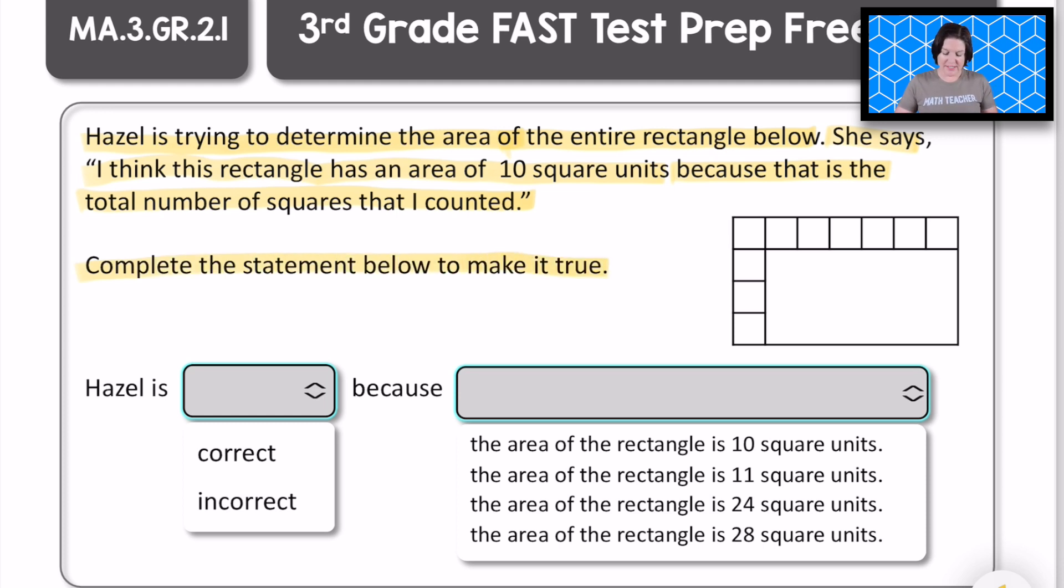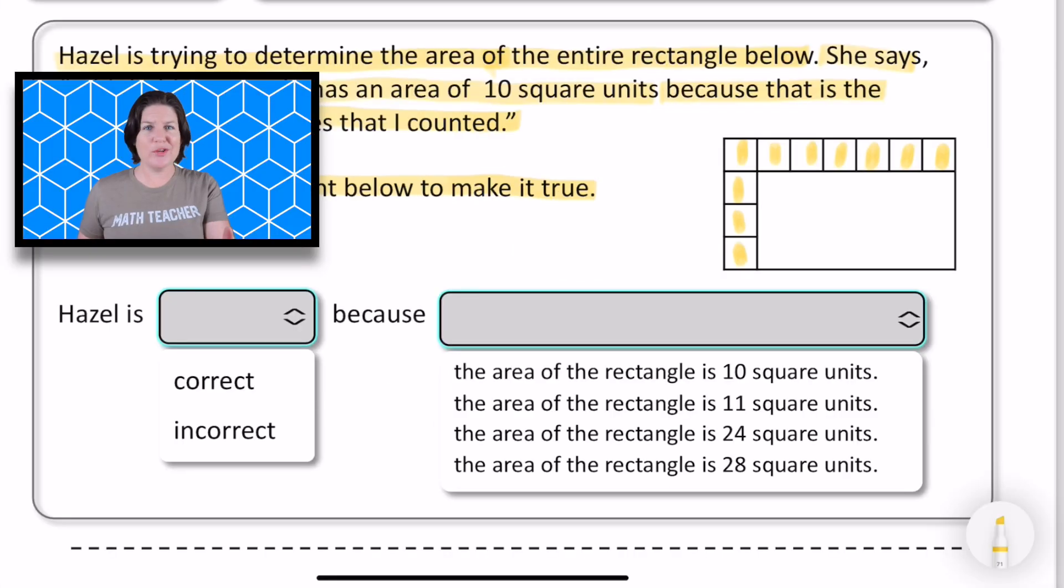So here she's saying that there are 10 square units, I'm guessing because of 1, 2, 3, 4, 5, 6, 7, 8, 9, 10. So Hazel believes that this rectangle has an area of 10 square units because that's the total number of squares that she counted. So what do you think? Is she correct or is she incorrect?